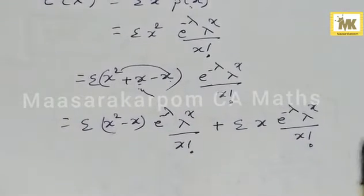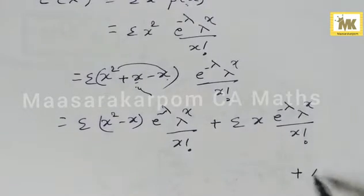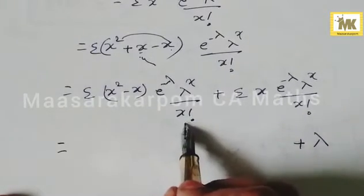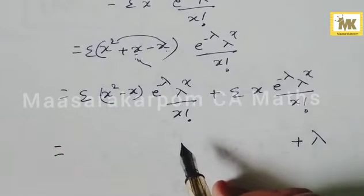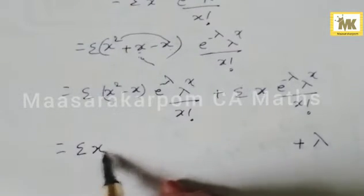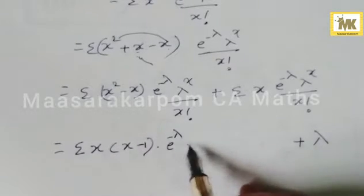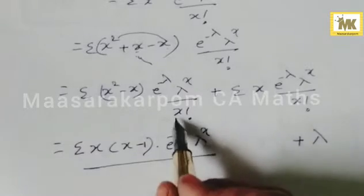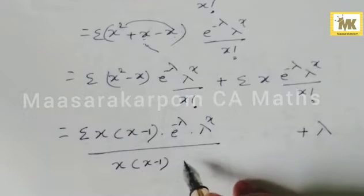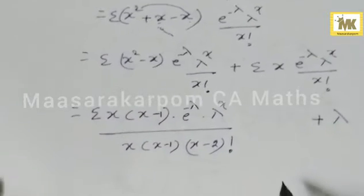The first part is sigma x(x-1) · e^{-λ} · λ^x / x!. Now x factorial is x · (x-1) · (x-2)!. So we have x(x-1) in the numerator and x(x-1)(x-2)! in the denominator, allowing us to cancel x and x-1. Plus lambda remains.